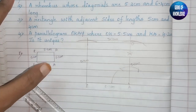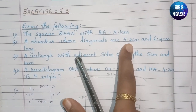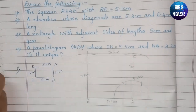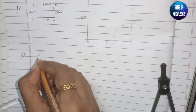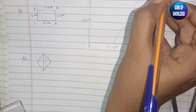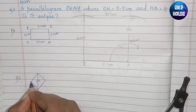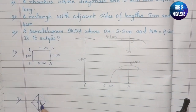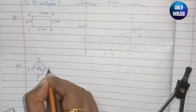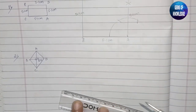The second sub-question asks us to draw a rhombus whose diagonals are 5.2 centimeters and 6.4 centimeters long. We label the vertices A, B, C, and D. The longer diagonal is 6.4 centimeters and the shorter diagonal is 5.2 centimeters. We begin by drawing diagonal BD equal to 5.2 centimeters.